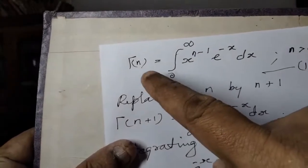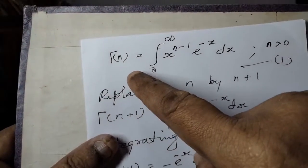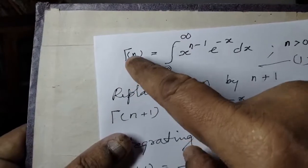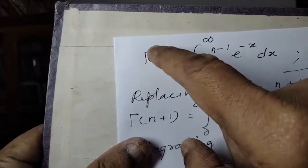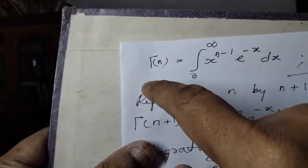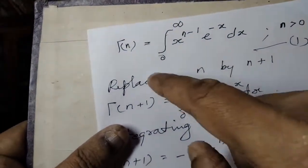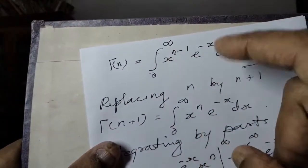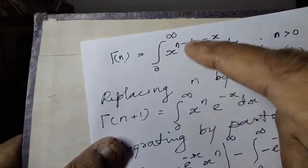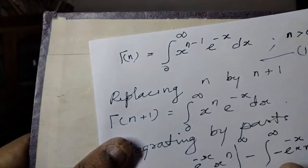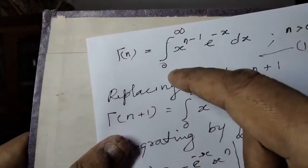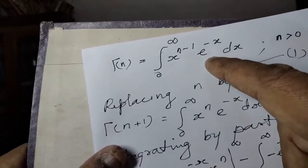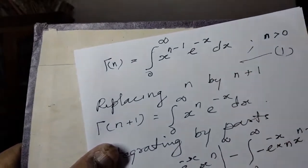For N greater than zero, the gamma function is defined using the Greek capital letter gamma. The gamma function for N greater than zero is defined by the integral from zero to infinity of x raised to n minus 1, times e raised to minus x, dx.